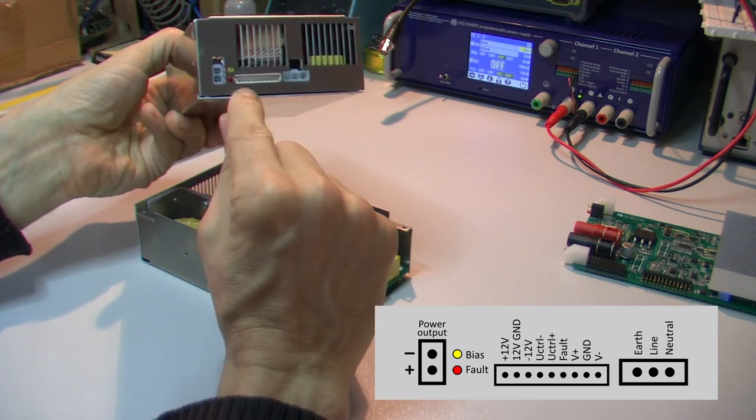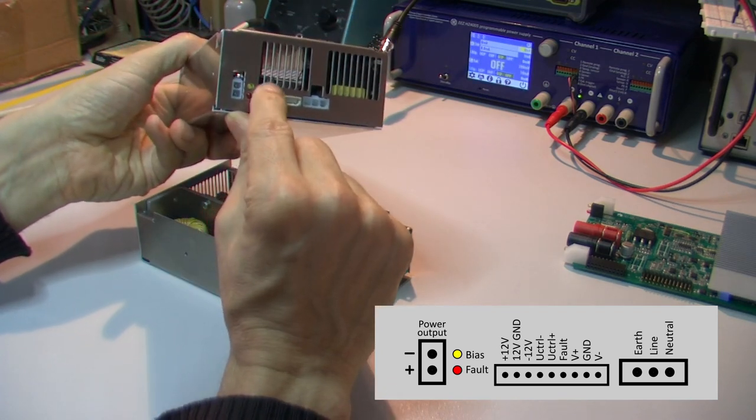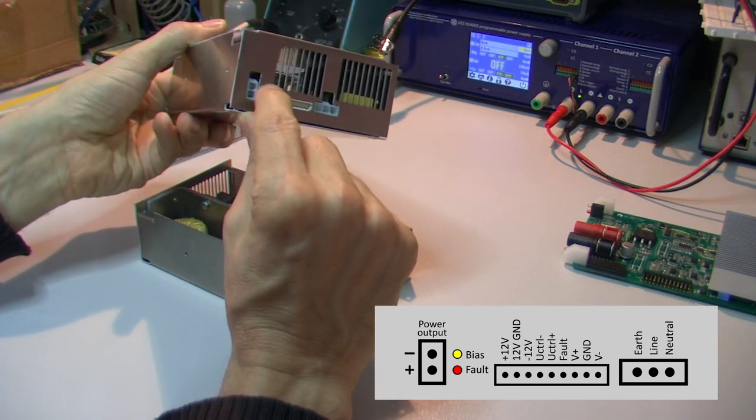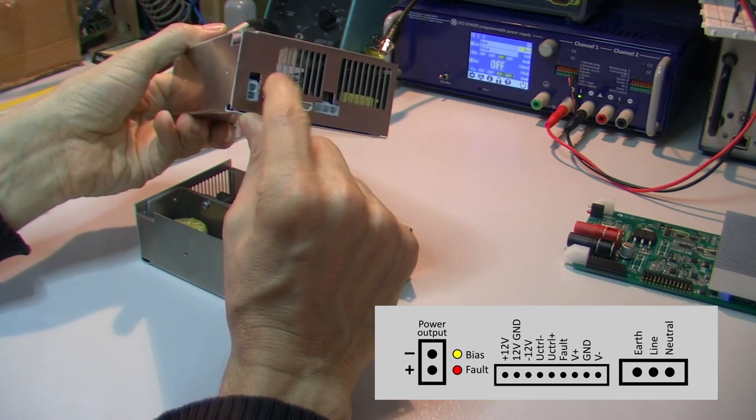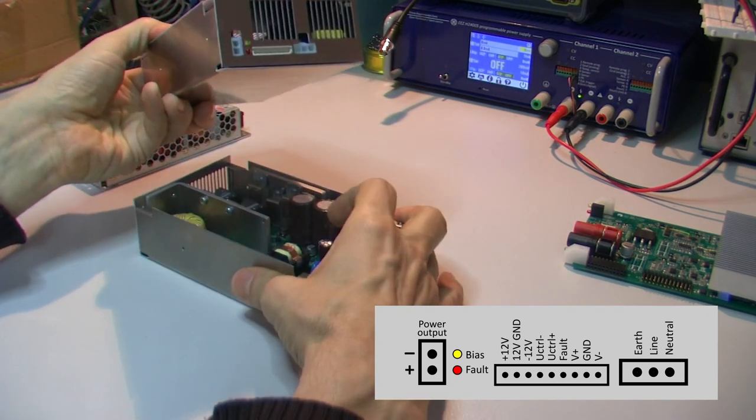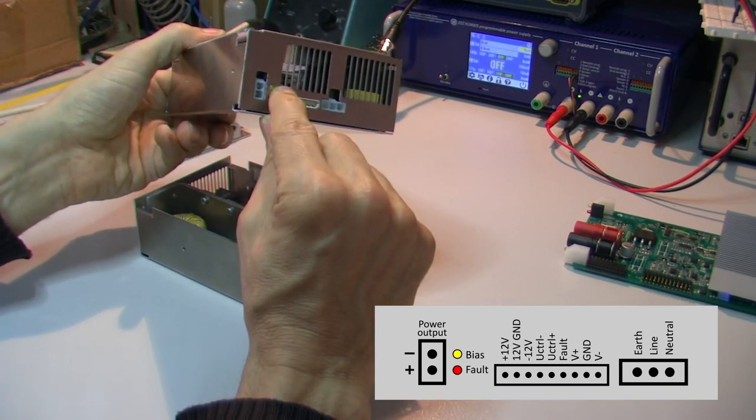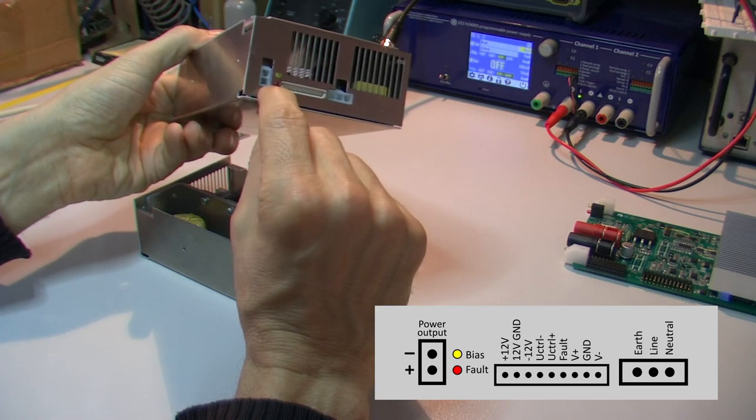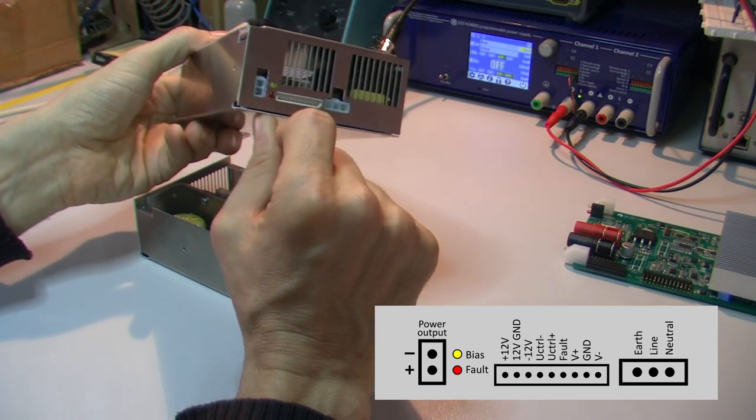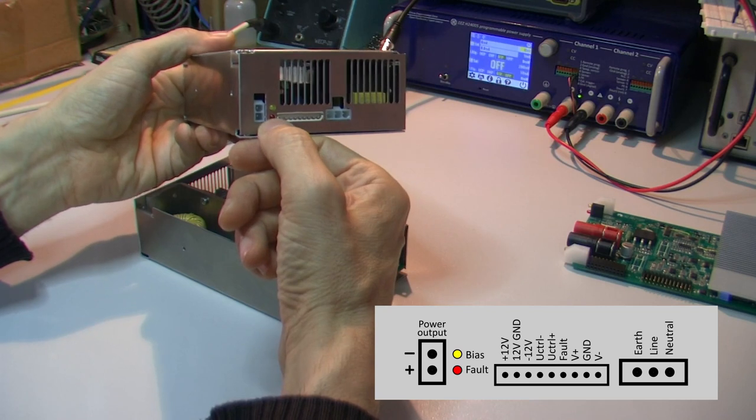It also has two indicators. One is that bias works, so that's a quasi resonant flyback. It came from plus 6.5 voltage and another one is a fault, that red one, that some fault condition has happened.